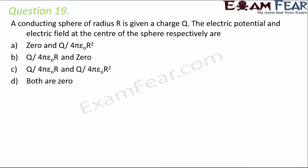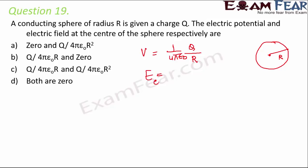Question number 19: a conducting sphere of radius R is given charge Q. The electric potential and electric field at the center of the sphere are asked. For a conducting sphere, the potential at the center equals the potential on the surface: kQ/R = Q/(4πε₀R). The electric field at the center is zero. The correct option is B.